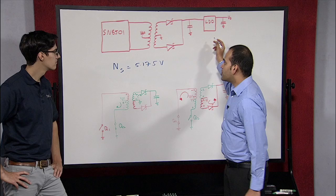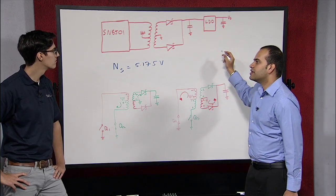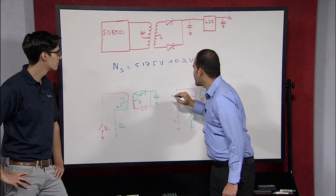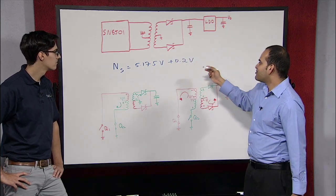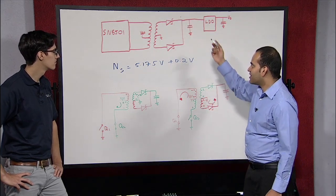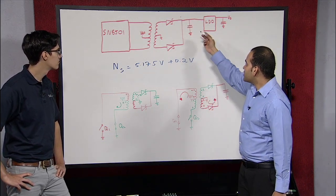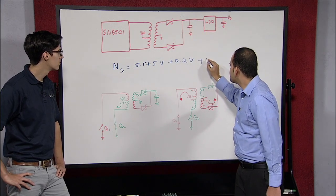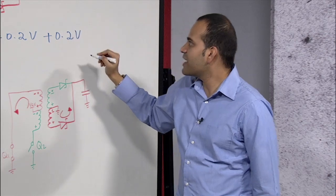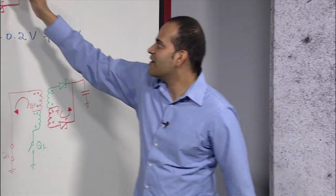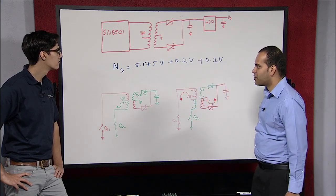The voltage drop of this particular LDO is 0.2 volts, which means we need at least 5.375 volts here at the output of the rectifier diodes. The voltage drop of this diode is also 0.2 volts, which means we need at least 5.575 volts here at the output of the secondary windings of the transformer.